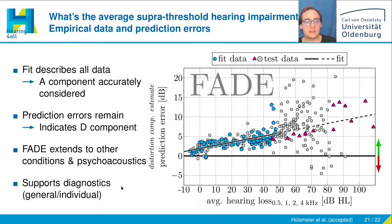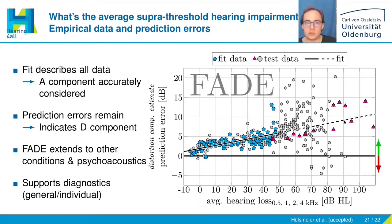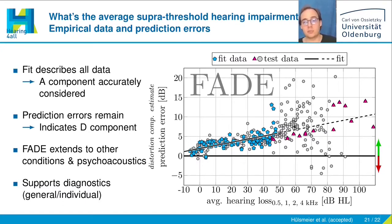Another nice thing is that these approaches directly support diagnostics in both a general and an individual sense. Generally, by just measuring the audiogram — for example, a person has a hearing loss of 90 dB HL — so most likely the D component is in the range of 10 dB. It can also be used on an individual level by making an individual prediction and looking at the difference between the attenuation component-based prediction and the actual measurement, regarding that difference as a D component estimate.